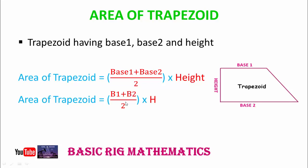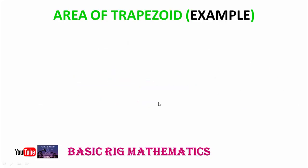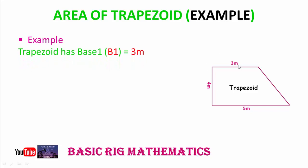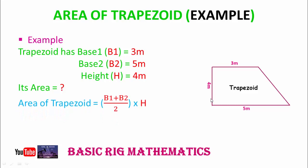Now we take an example. Let's suppose you have a trapezoid with base 1 equals 3 meters, base 2 equals 5 meters, and height equals 4 meters. What will its area be? As we already know, area of trapezoid equals B1 plus B2 divided by 2, multiplied by H.